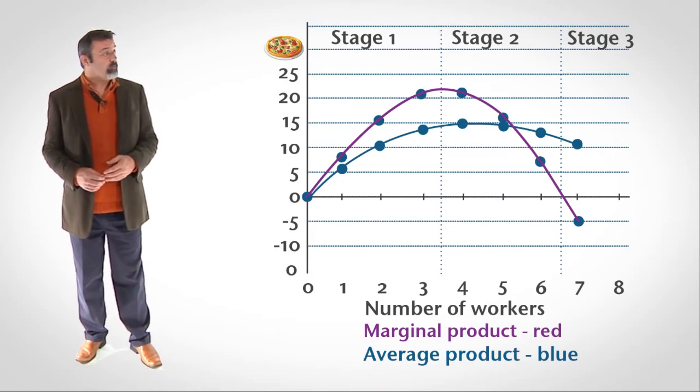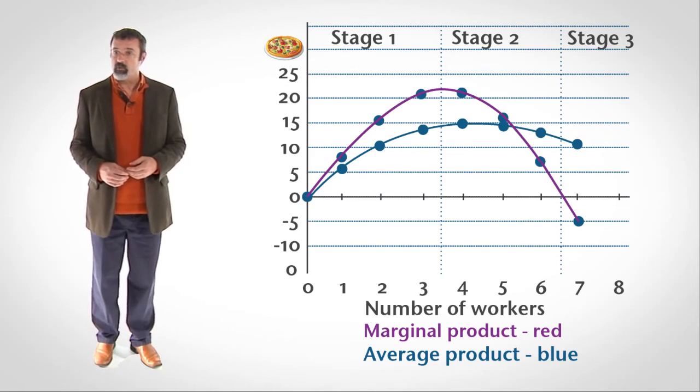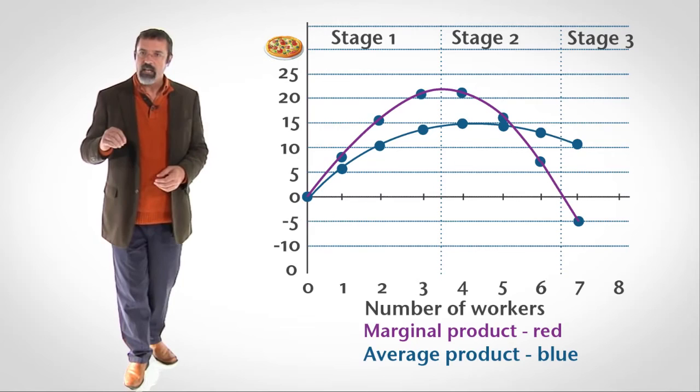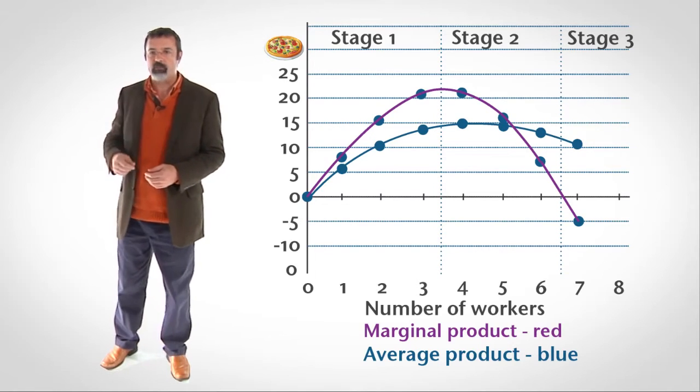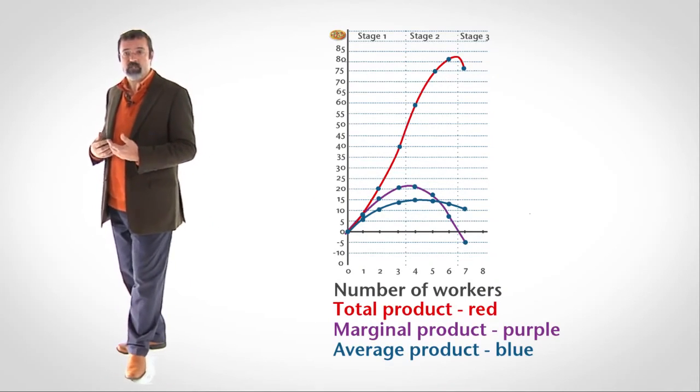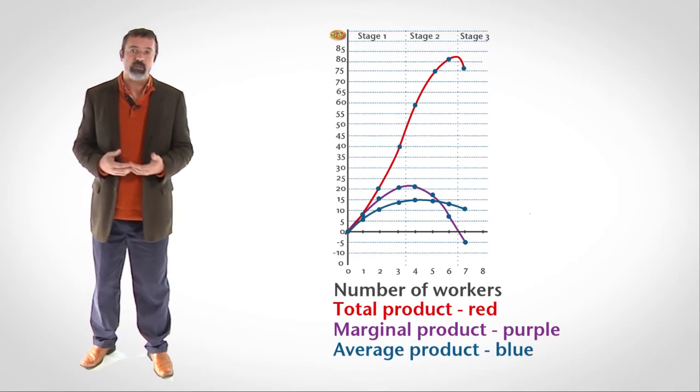In Stage 2, marginal product starts to fall as the number of workers increases. As long as marginal product is greater than average product, adding workers pulls the average product up. It's like getting lower and lower test scores — even though you're getting lower and lower test scores, as long as those scores are above your course average, they pull your course average up. Once marginal product falls below average product, it starts to pull the average product down. Throughout Stage 2, output is increasing, but it is increasing at a decreasing rate.